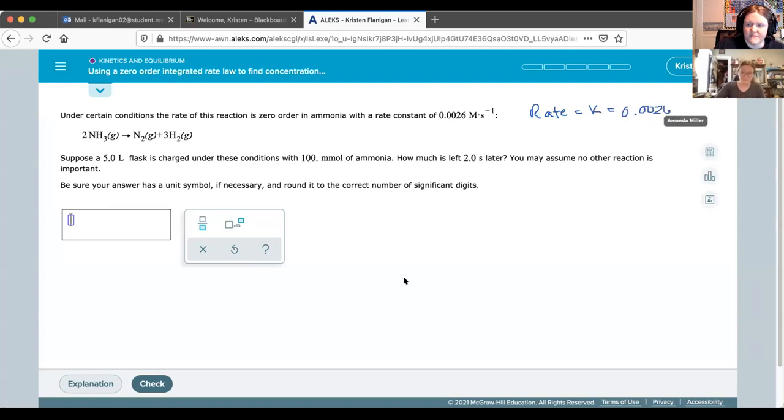I don't know why it's dragging. So to know how much is left after two seconds, all we have to do is multiply whatever we started with. In this case, 100 millimolars - millimoles, not molar - of ammonia. That's our NH3.